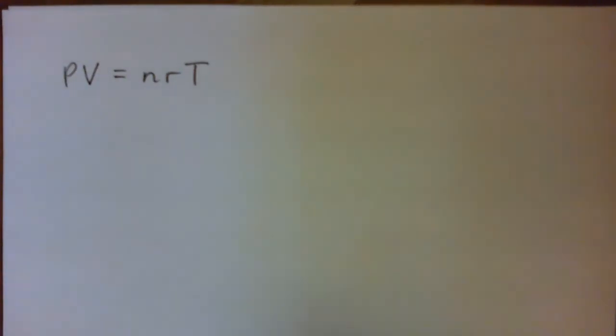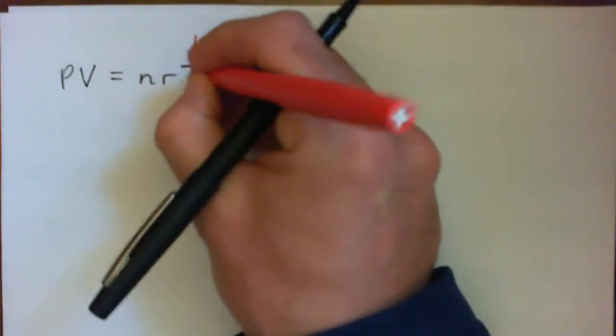So for PV equals nRT, solving that for T, we're going to get T on its own.